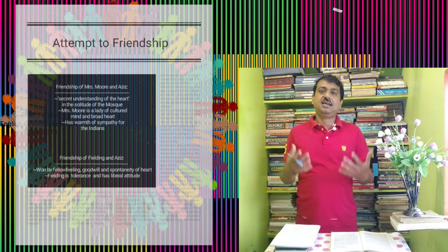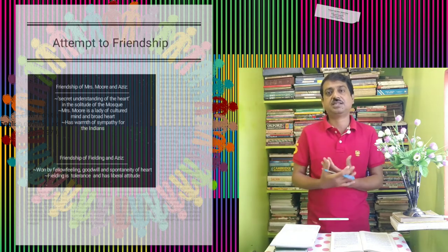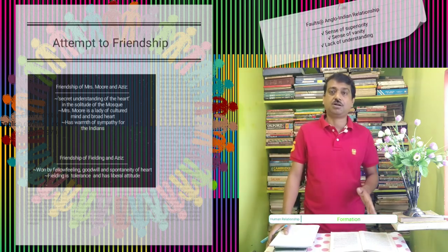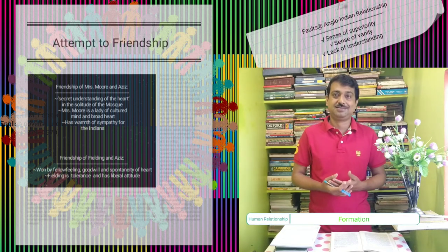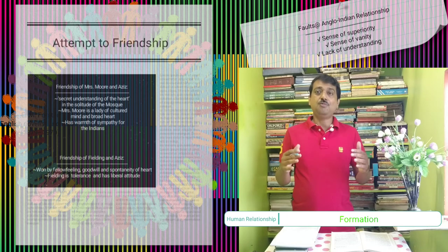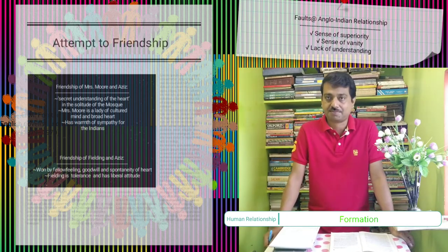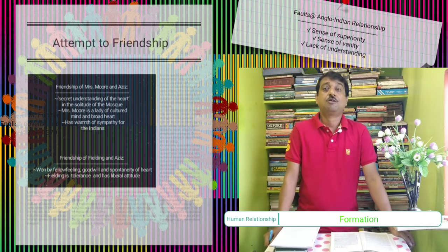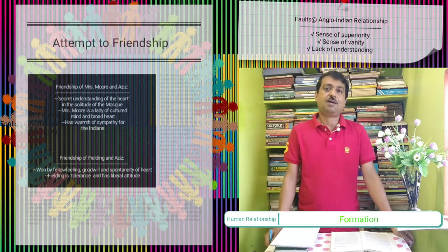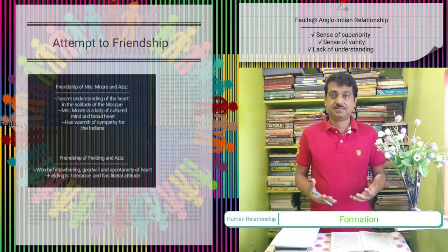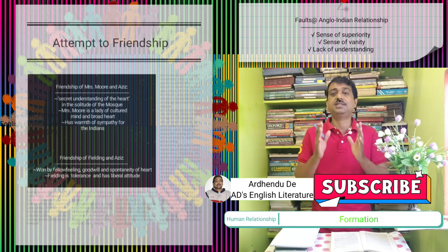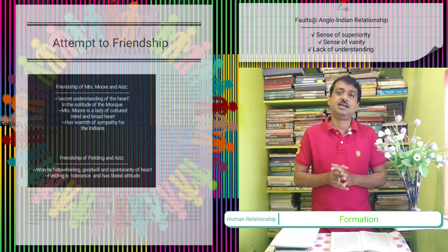Forster regarded this as a great problem which shook the very foundation of Anglo-Indian relationships. The English suffered from a sense of superiority and believed that native Indians could not be brought to the level of friendship and equal treatment. One cannot have a true friendship without true understanding and value of the other counterpart. The sense of vanity and consequent lack of understanding created a permanent divide between Indians and the English. No amount of culture, intelligence, or good gesture could bridge this gap.